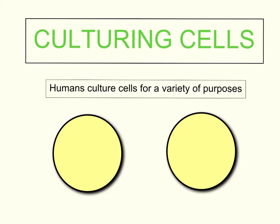Hi everyone. This lesson is called Culturing Cells, and it focuses on this key idea that humans culture cells for a variety of purposes. Before we begin, we need to ask ourselves: what is cell culturing? Cell culturing is a process by which scientists can grow cells in a laboratory environment in a nutrient medium outside of the body, and they usually do so in petri dishes.